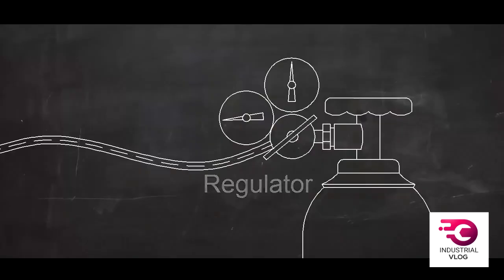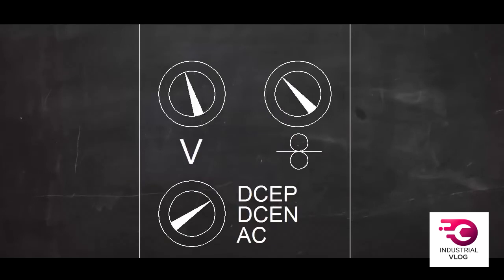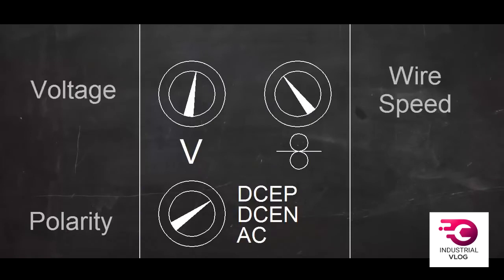In MIG welding, all the machine controls are set on the machine itself. The most important of these are polarity, wire speed, and voltage. The trigger on the gun is just an on-off switch.